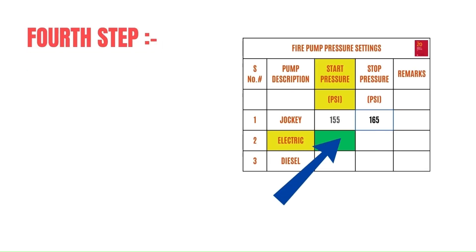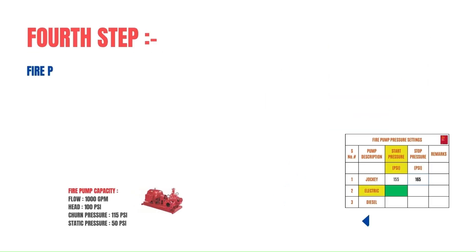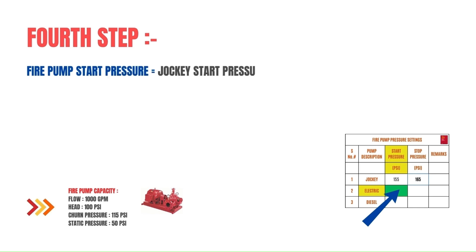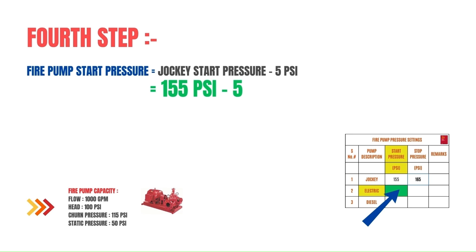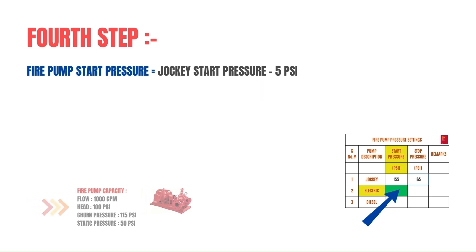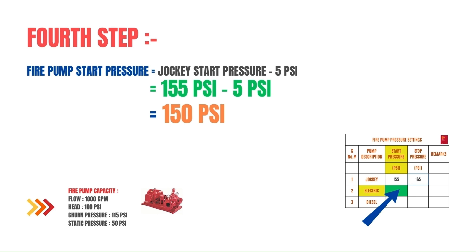The fourth step is very important: calculating the fire pump start pressure, or electric main fire water pump start pressure. It should be 5 psi below the jockey start pressure. So 155 psi minus 5 psi gives us 150 psi.